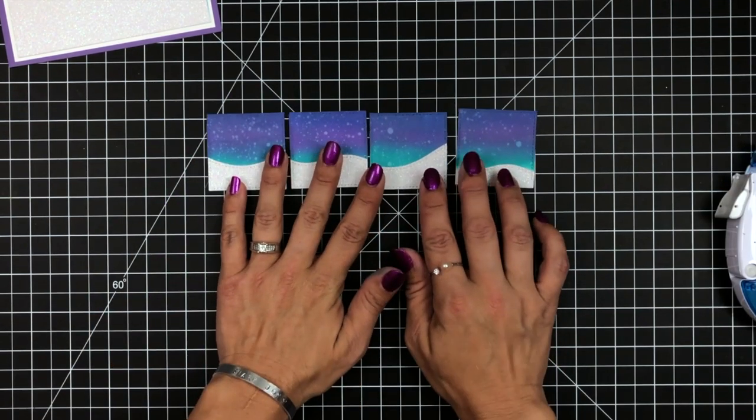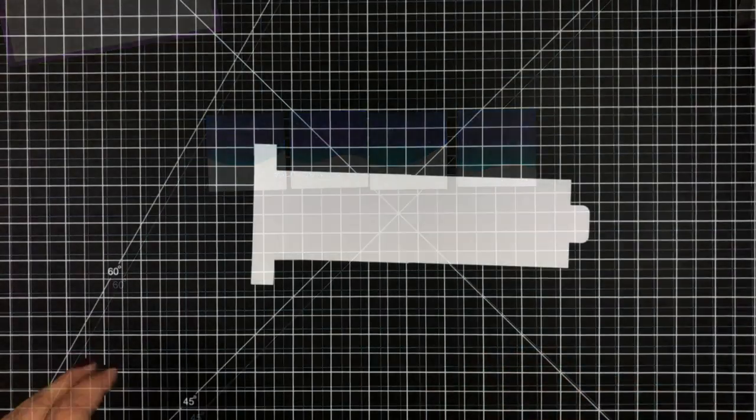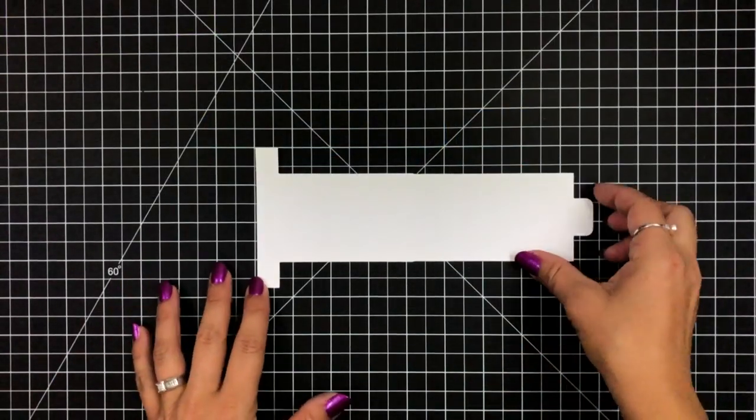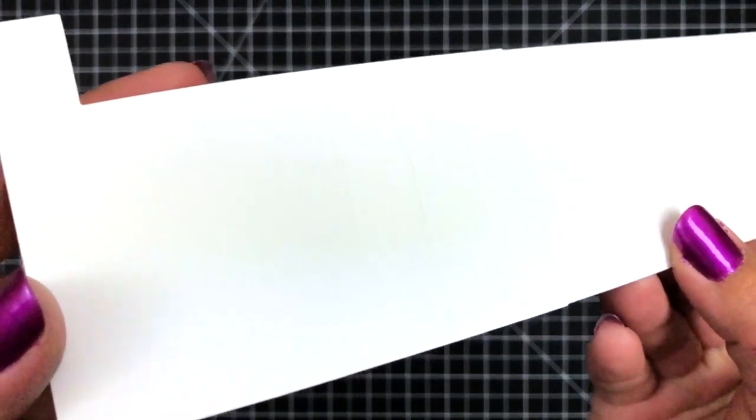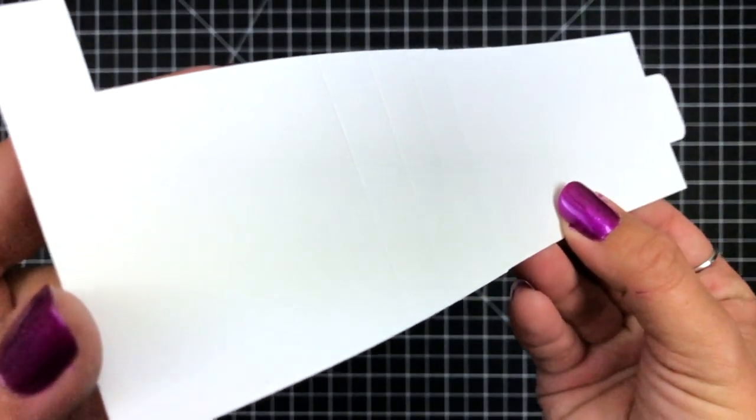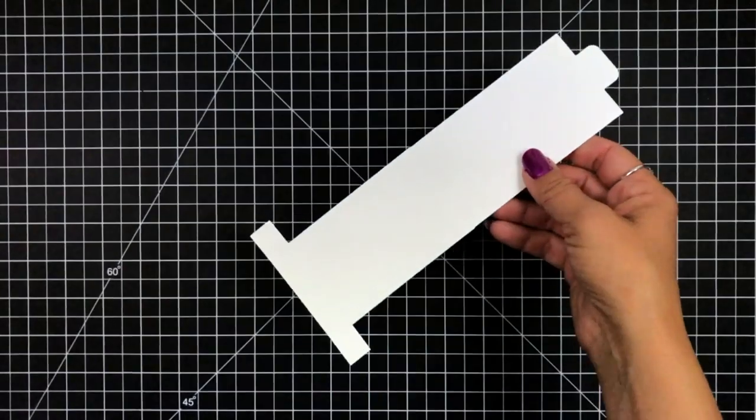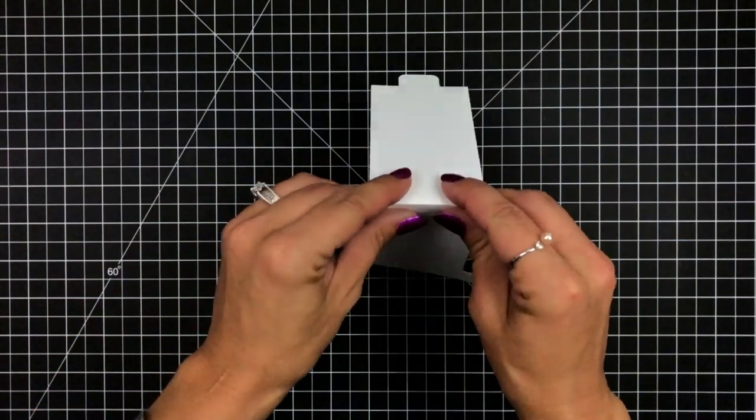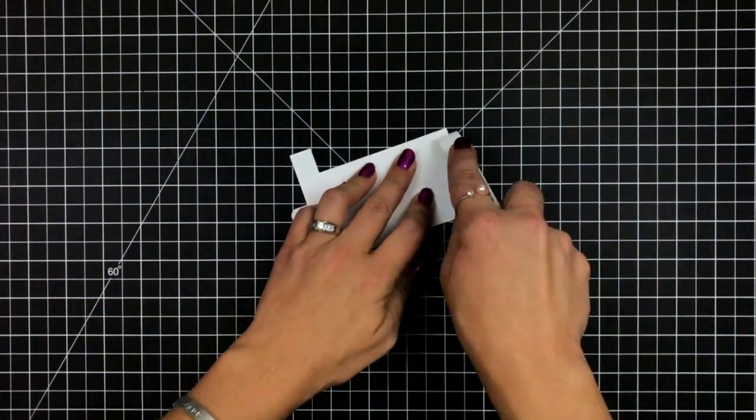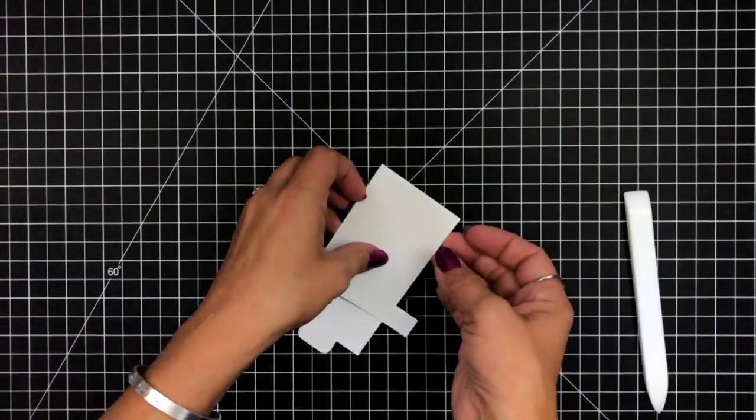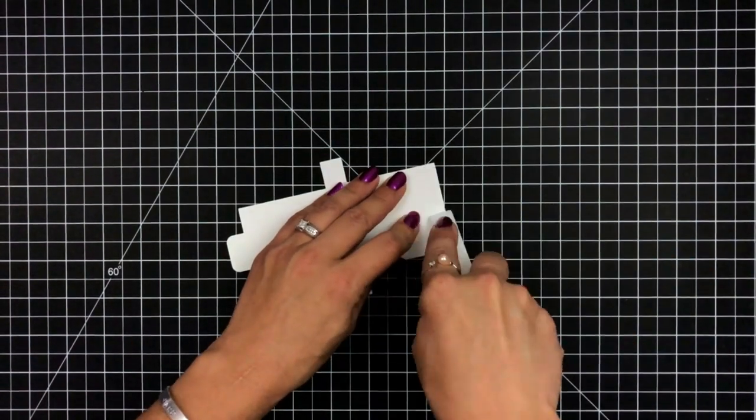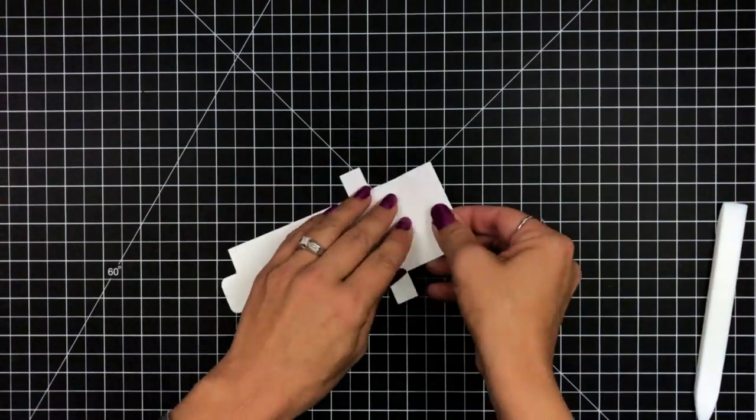And then using white cardstock, I die cut out the Flippin' Awesome die. This is the main piece of our flip book. I'm trying to show you the score lines here. What you'll need to do is fold along all of those lines. So to start out with, I go through and flip them all one way, and then I use the bone folder to crease that down and really get a nice crease on them.